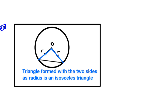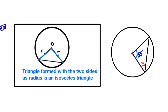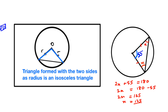The next circle theorem: a triangle formed with two sides as radii is an isosceles triangle. Because the radii are equal, the opposite angles will also be equal. In this question we have been given a triangle where two sides are the radius, and the angle at the center has been given. Because it is an isosceles triangle, the two base angles are both x. Therefore 2x plus 55 is equal to 180, so 2x equals 125, and dividing by 2 gives us x equal to 62.5 degrees.